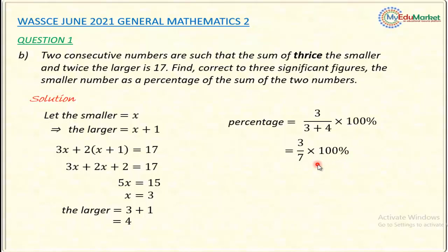I multiply this, I'll get 42.857%. But the question demands me to give my answer to 3 significant figures. So I have to approximate this value to 3SF. 4, 2, 8. Remember we count 1, 2, 3, then look at the next. So this will give answer 42.9%. So by this, I have answered this question.